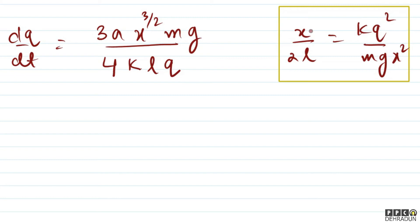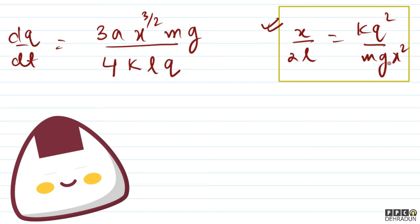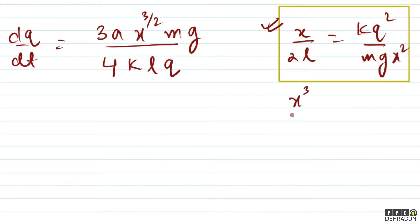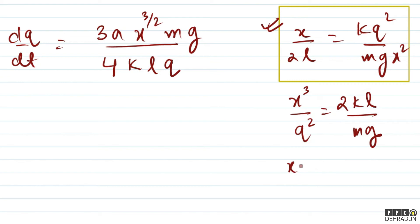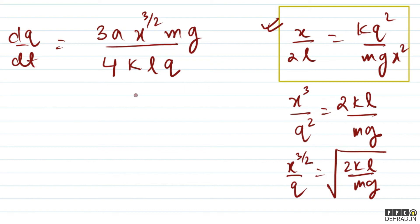लेकिन बच्चों, इसके अलावा हम लोग एक और चीज़ जानते हैं। x/(2l) = kq²/(mgx²) से x³/q² = 2kl/mg आता है। अगर इसका root लें तो x^(3/2)/q = √(2kl/mg) आ जाएगा। यह term हमें ऊपर वाले expression में भी दिख रहा है।